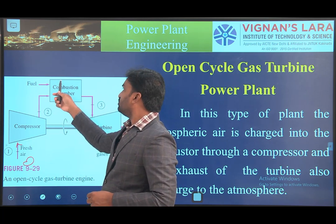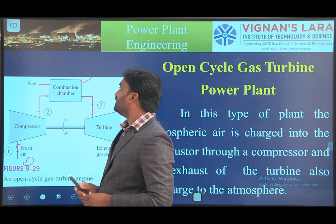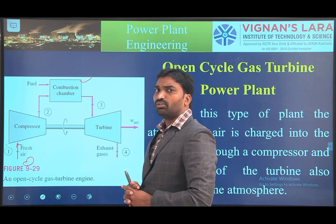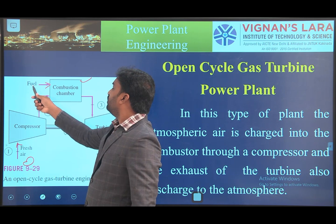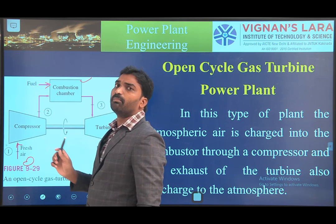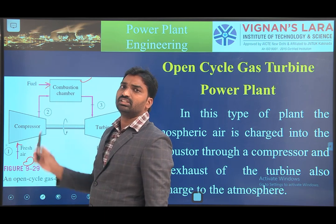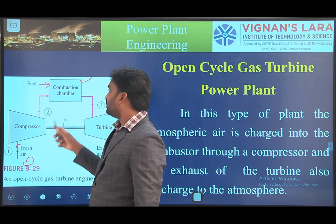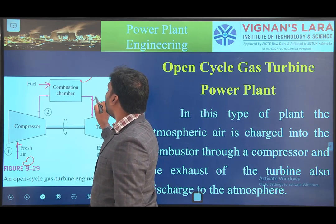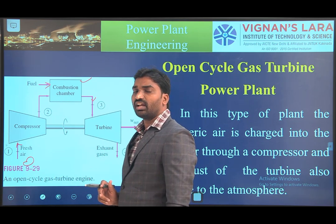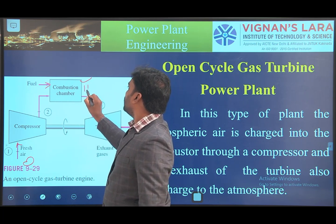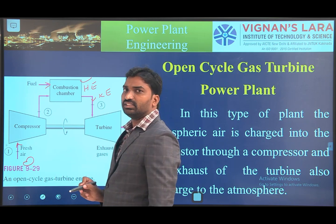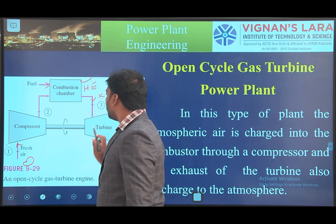After compression, the air is sent to the combustion chamber. In the combustion chamber, fuel with a high octane number — generally natural gas — is injected and mixed with the compressed air. Combustion takes place, producing high pressure and high temperature gas. The heat energy from combustion is converted into kinetic energy.